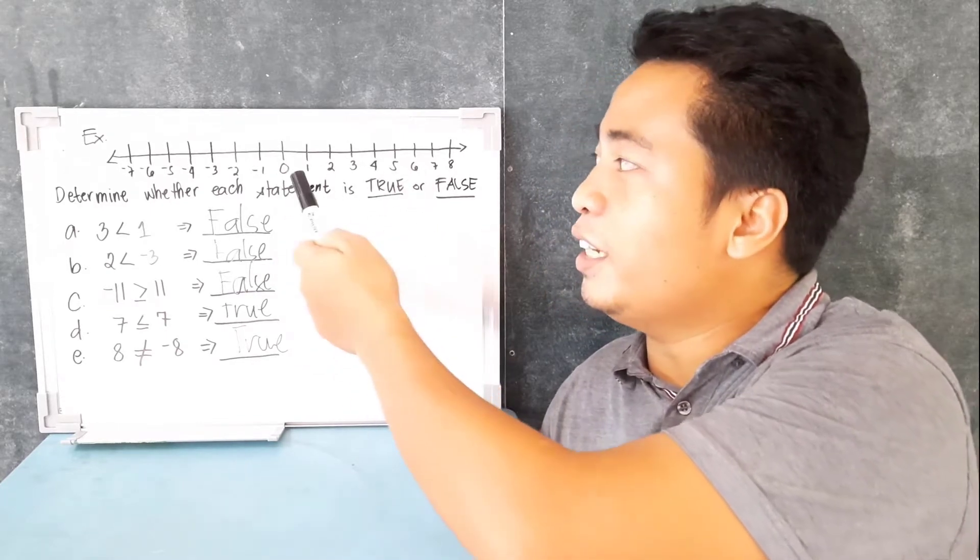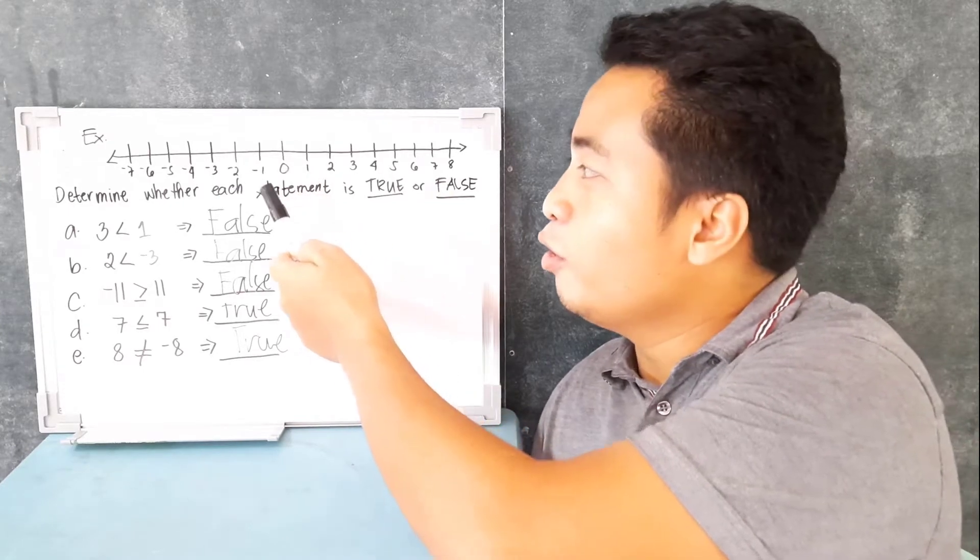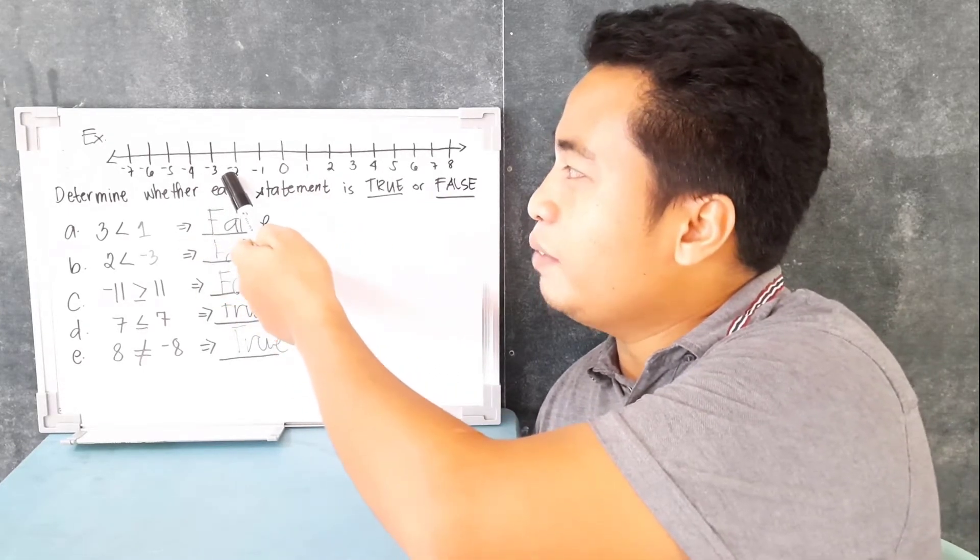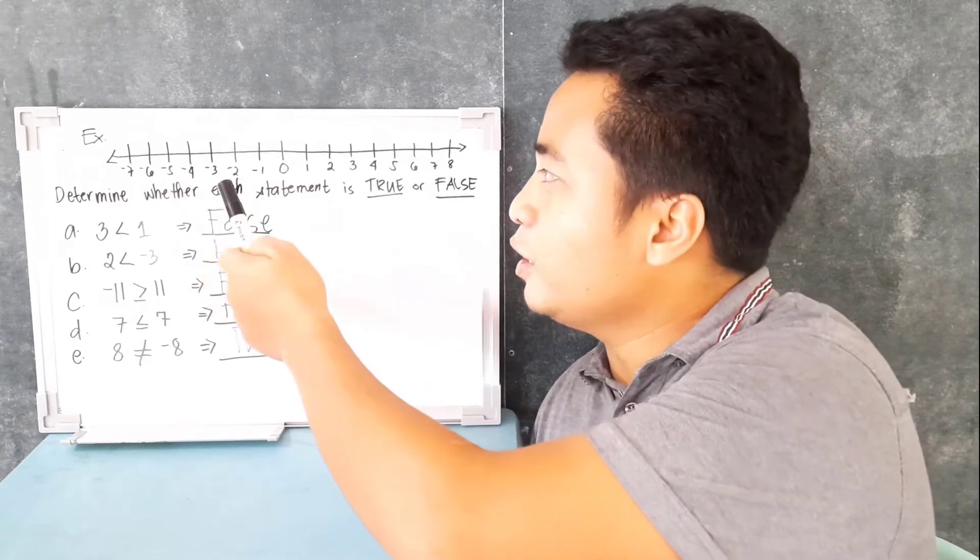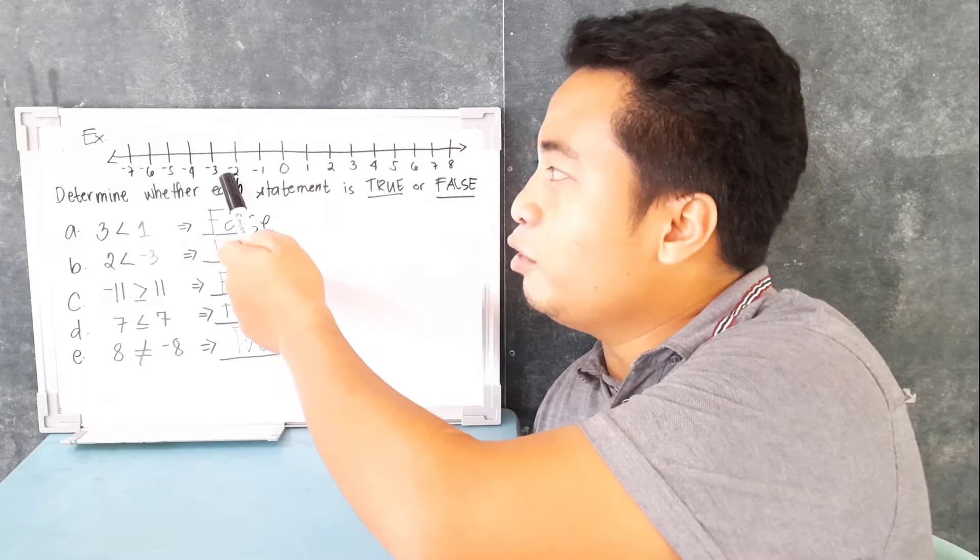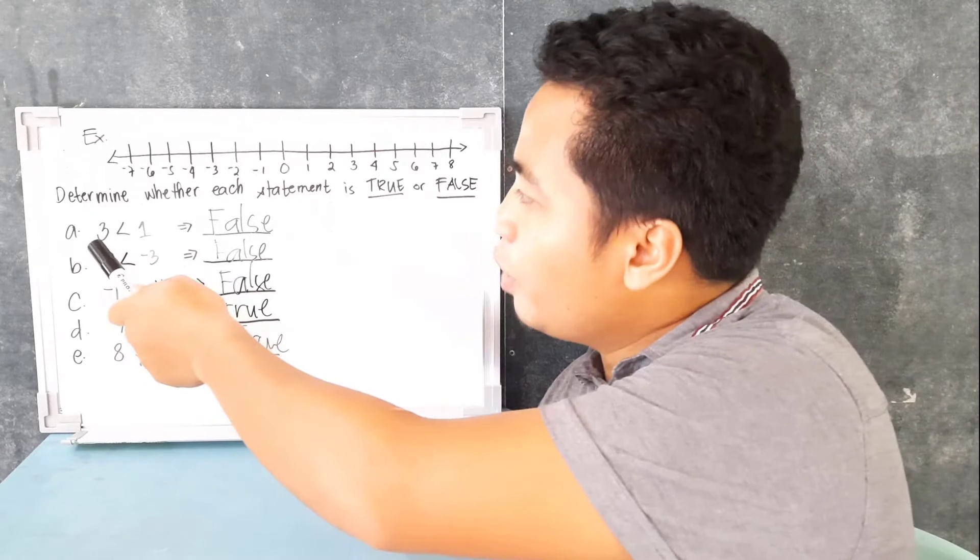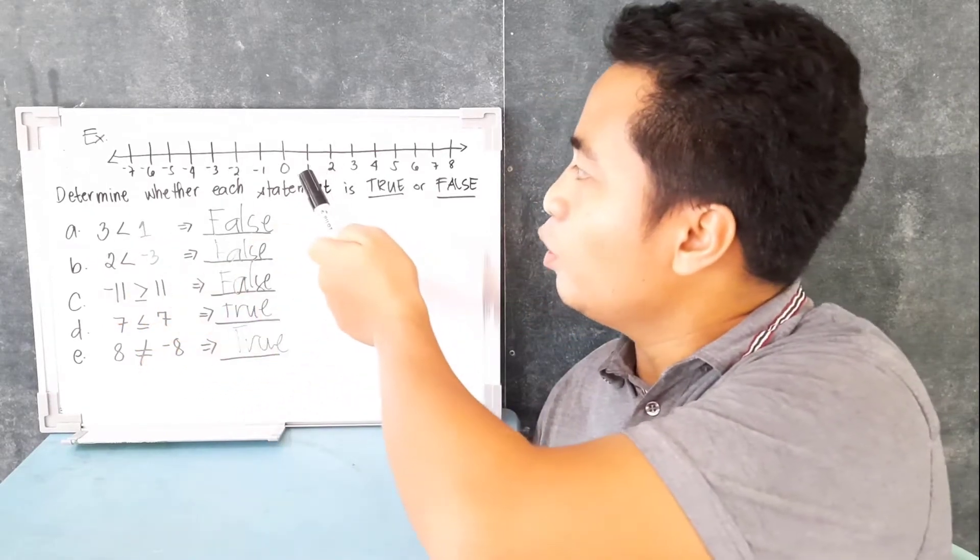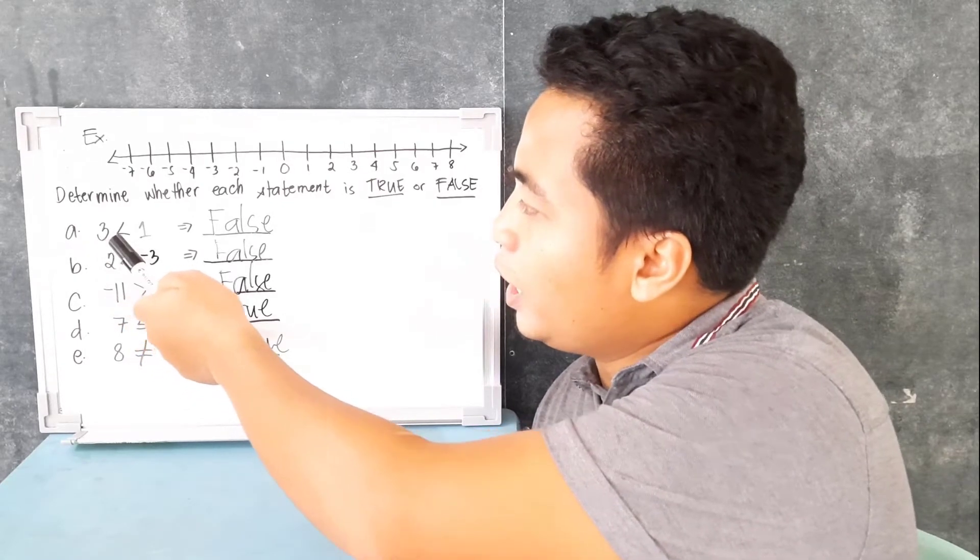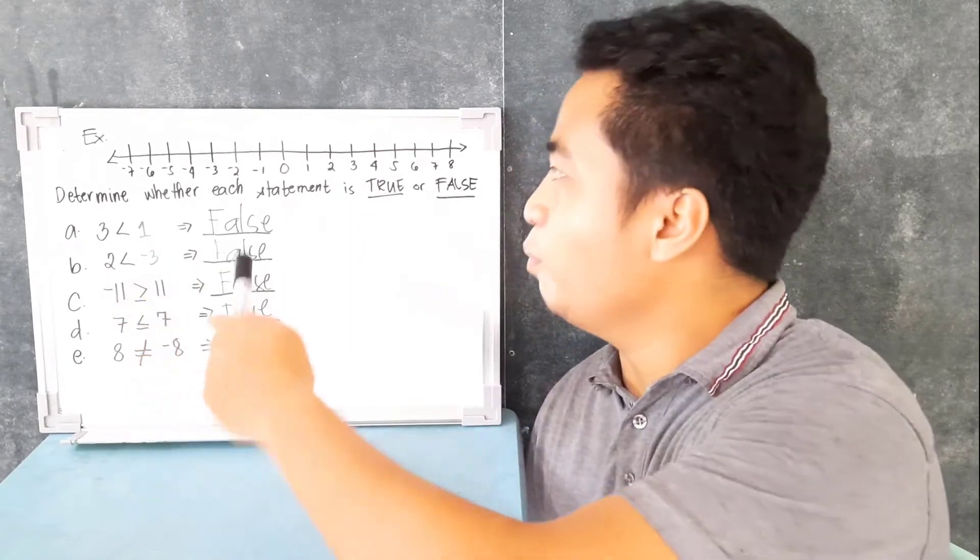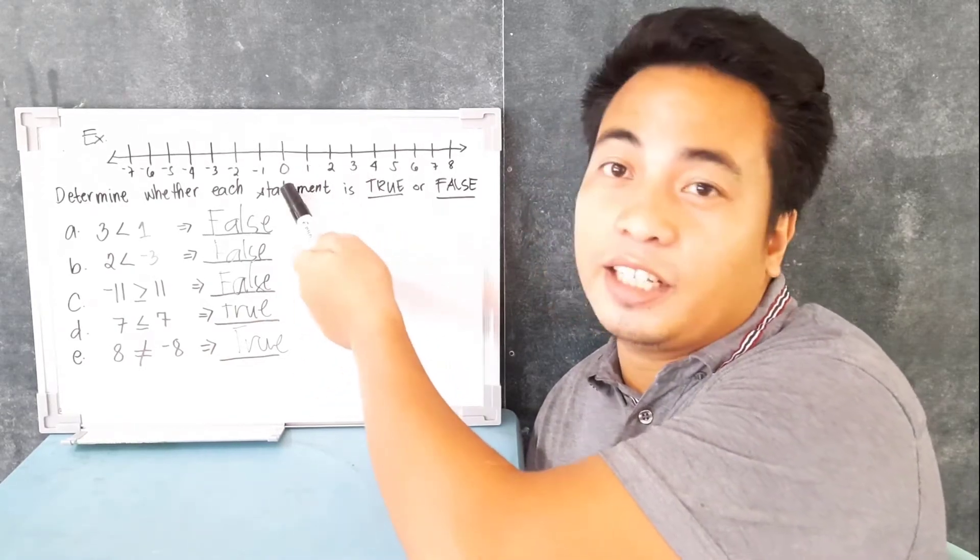And what about 6? It is greater than 1 because 6 is in the right side of 1. What about negative 2? Is it greater than negative 5? Yes, because negative 2 is in the right side of negative 5. So in this example, where it is 3 and 1, 1 is here and 3 is here. In the question, is 3 less than 1? No, because 3 is in the right side of 1. Then supposedly 3 is greater than 1.